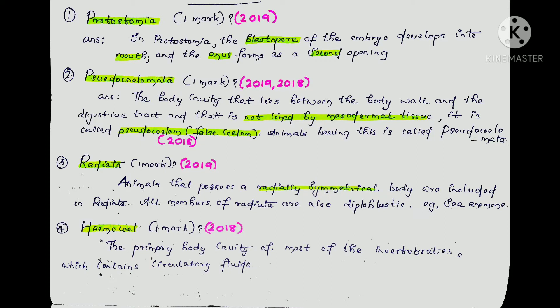So, first question: what is Protostomia? This is a question from 2019. In Protostomia, the blastopore of the embryo develops into the mouth, and the anus forms as the second opening.